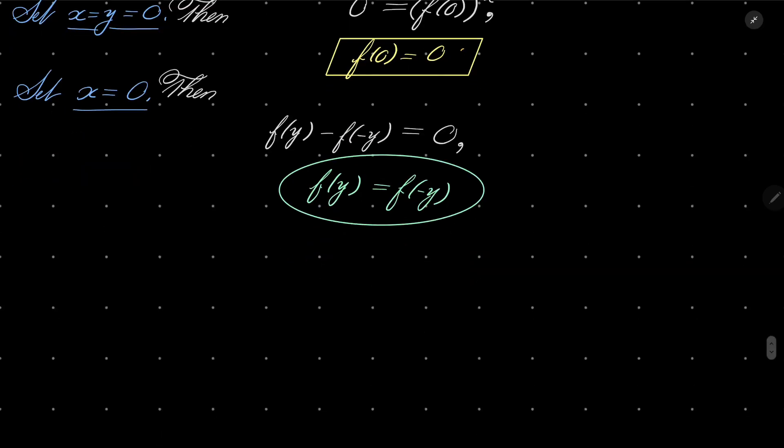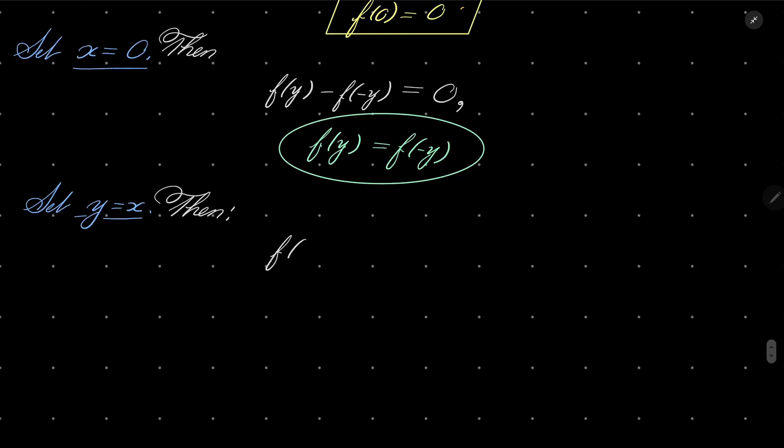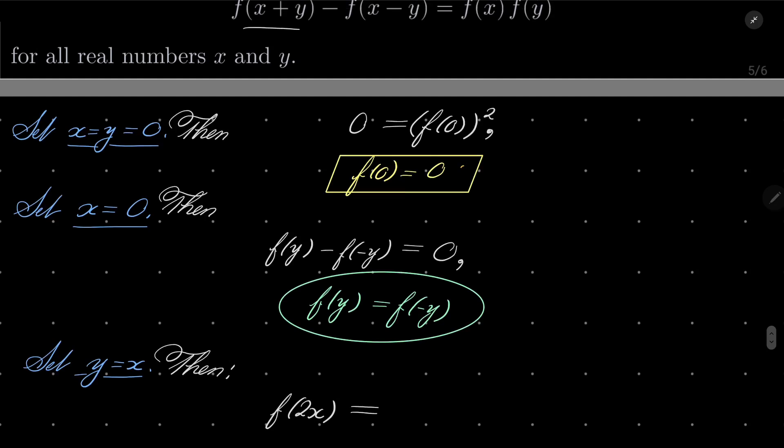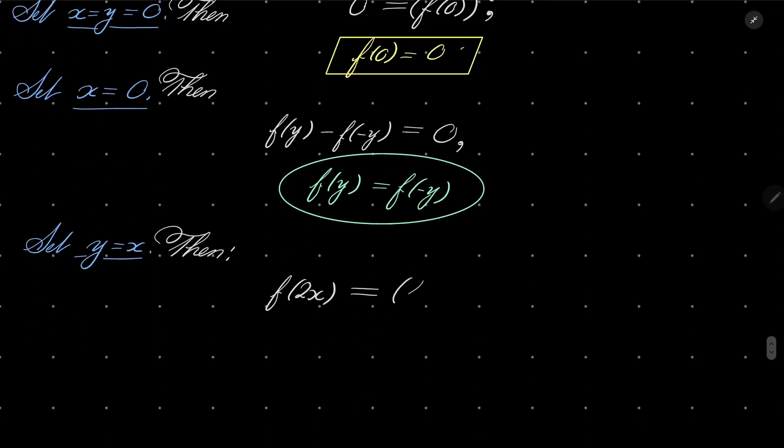Then, let's set y to be x. What then? Then, we have the following. On the left-hand side, we have f(2x) - f(0), but f(0) is 0, and that equals f(x) squared.